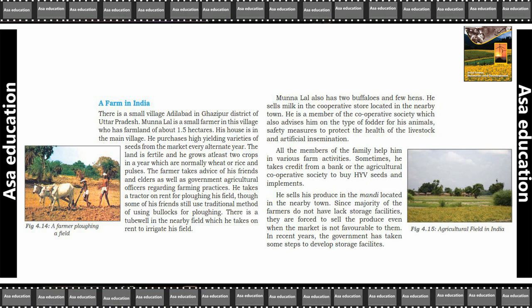Methods include increasing the crop area, increasing the number of crops, improving irrigation facilities, using better quality fertilizers, and using high quality seeds. Mechanization of agriculture — the use of technology and machines in farming — is also a major aspect of agricultural development. The ultimate aim of agricultural development is to increase food security. Agriculture has developed at different places in different parts of the world.